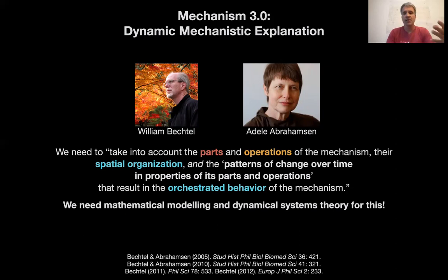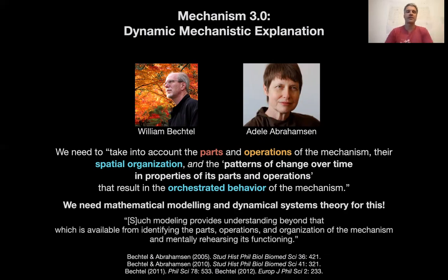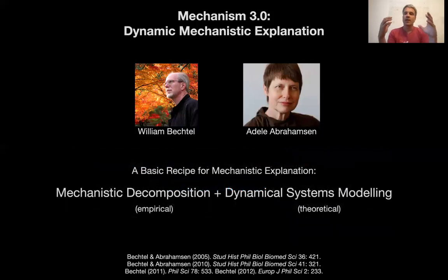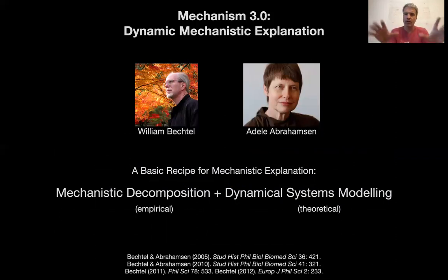How do you track those spatiotemporal interactions? You need mathematical modeling and dynamical systems theory. Not just any mathematical model, but one that tracks all these different interactions happening at the same time in different locations at different times. You cannot do this in your head once the system is above a certain complexity. In the case of the gap genes, it's very hard to track all the interactions at the same time. They say such modeling provides understanding beyond that available from identifying the parts, operations, and organization of the mechanism — so your ability to mentally rehearse the functioning of a mechanism is extremely limited, and you need computational or mathematical modeling to help you.